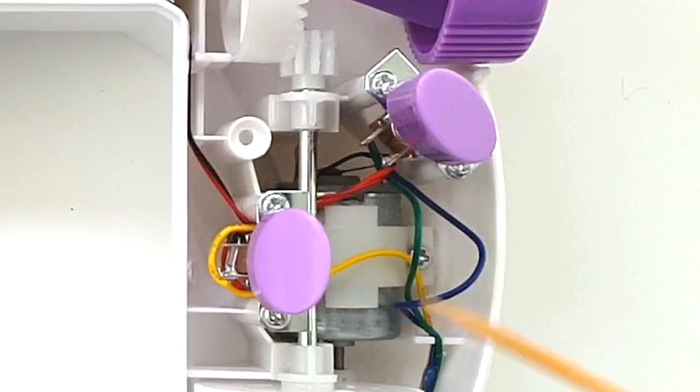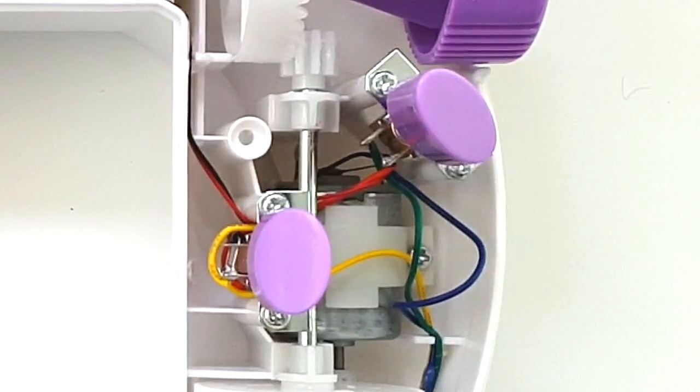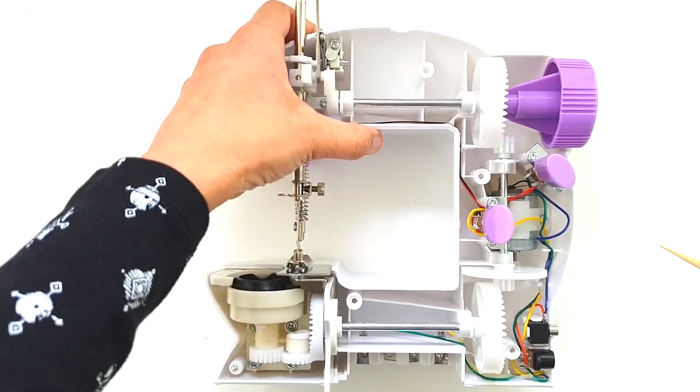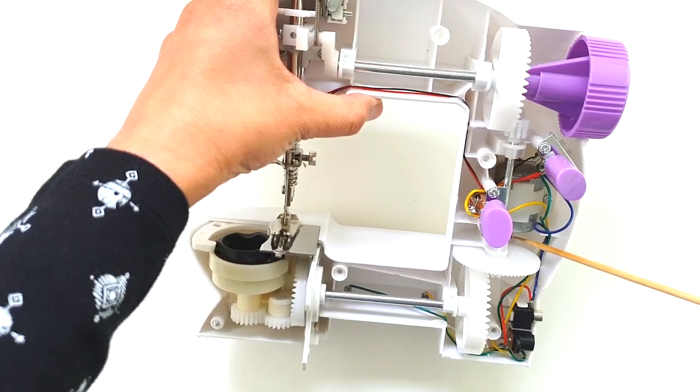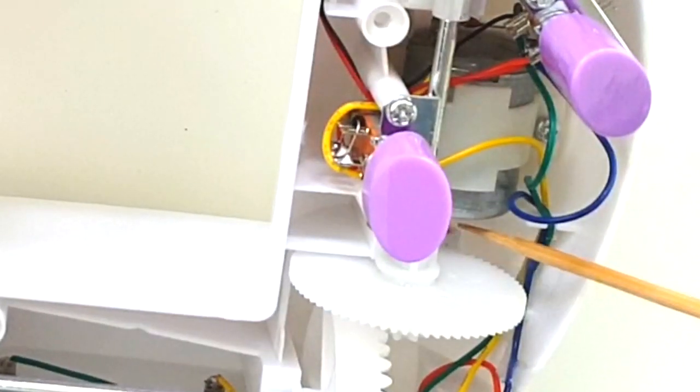Now the first gear that it turns, and let me just lift up the machine to show you, is actually a tiny little one right at the back. Where my skewer is touching, that's the very first little gear.